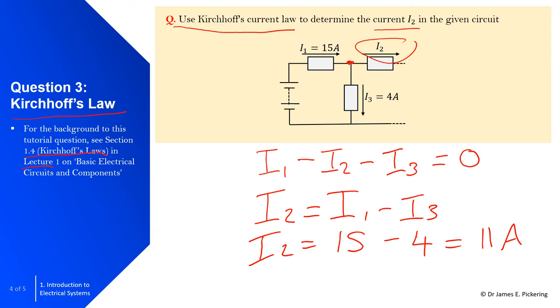It's kind of obvious, because when you look at it, 15 amps is flowing through this resistor here. At the junction, 4 amps is effectively passing through this resistor. So it's obviously the difference up here, it needs to be 11 amps.